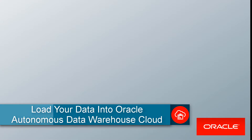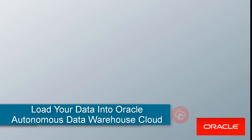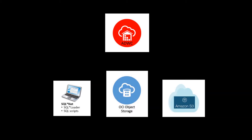This video shows you how to load data from an Oracle Object Store into a database in Autonomous Data Warehouse Cloud. If you have small volumes of data to load into Autonomous Data Warehouse Cloud, you can load data via SQLNet. If you have large volumes of data, the preferred technique is to load from files stored in a cloud-based object store, such as Oracle Object Storage or Amazon AWS S3. This video shows you how to upload data to Oracle Object Storage and then copy this staged data into database tables in Autonomous Data Warehouse Cloud.